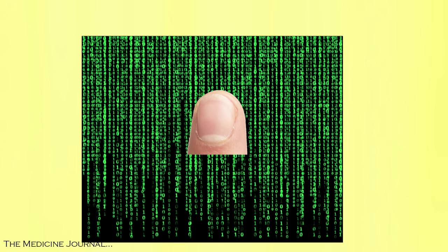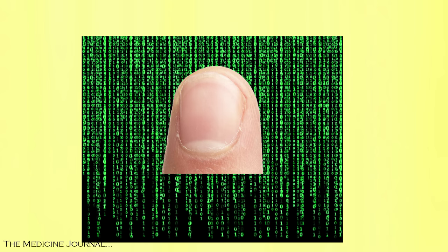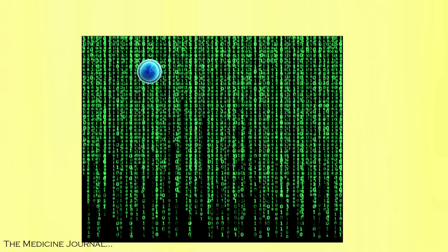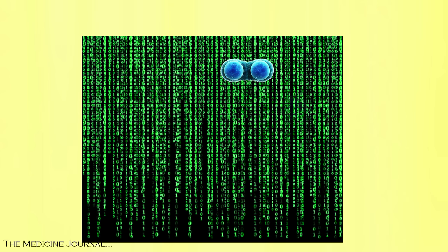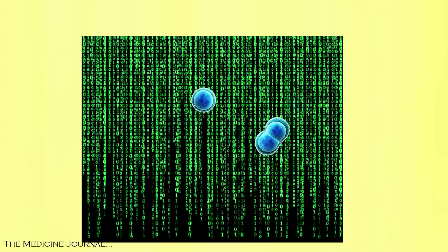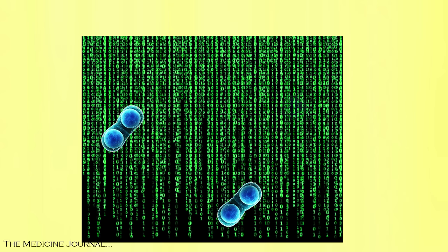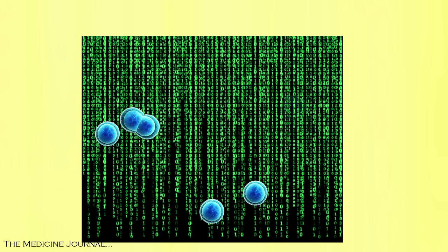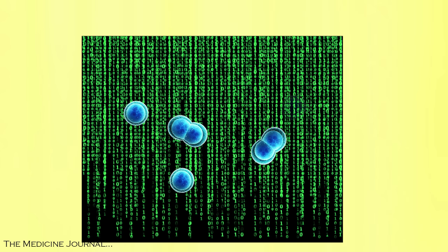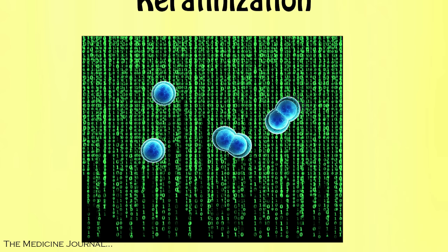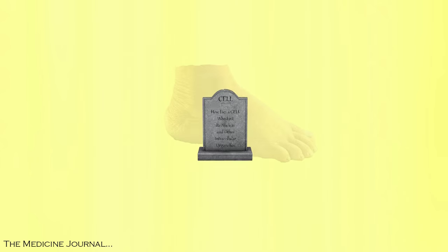Our nails are primarily grown from what is called the matrix. The matrix consists of epithelial cells that grow and divide. These cells primarily contain keratin. Once they begin to reach the end of their respective life cycles, they go through a process called keratinization.